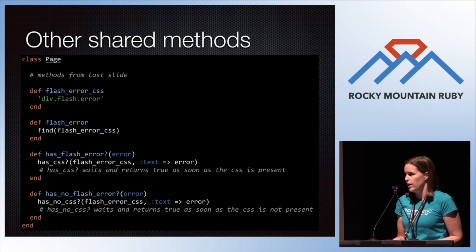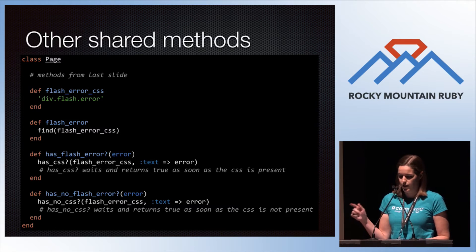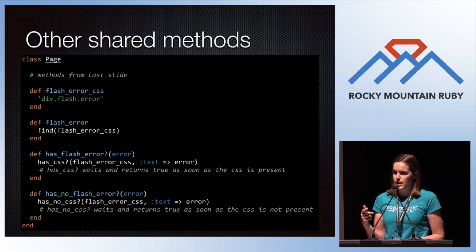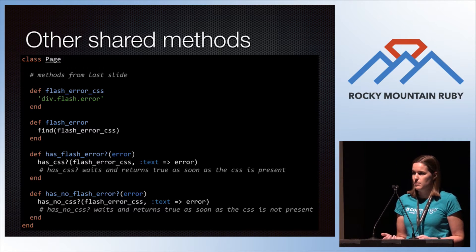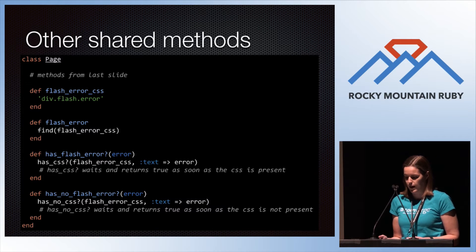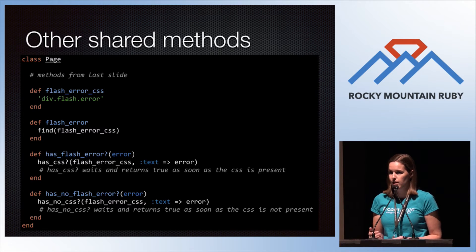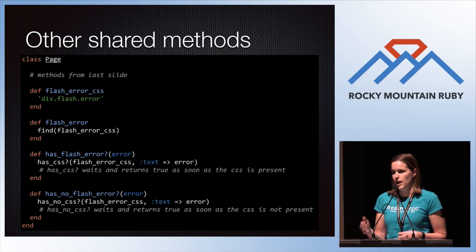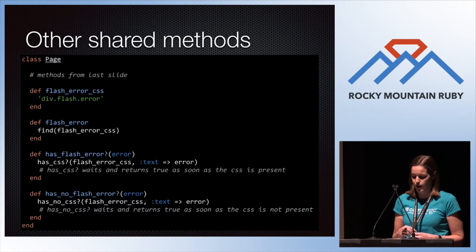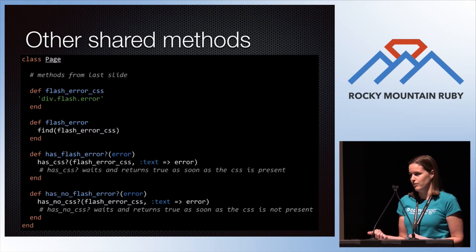So I did promise some Capybara tips — here's one. There are two methods: has_flash_error and has_no_flash_error, using has_css and has_no_css in Capybara. You might wonder why you have both instead of just expecting the first to be false. The reason is performance: Capybara will wait for those methods to be true, waiting for things to load on the page. If a test passes on the negative condition, use has_no_css so it passes as soon as it's not visible, instead of waiting the full default wait time. If you have tests always taking 30 seconds — which happens to be your configured wait time — look for this in your code.